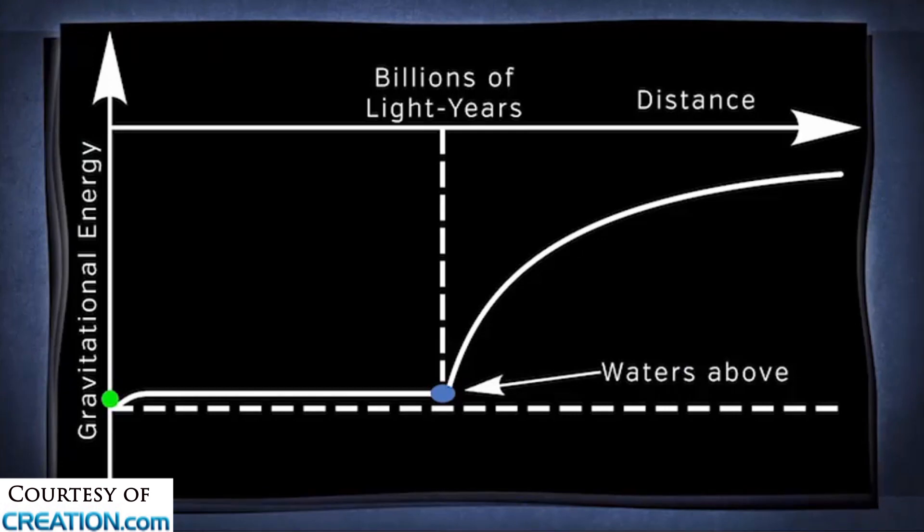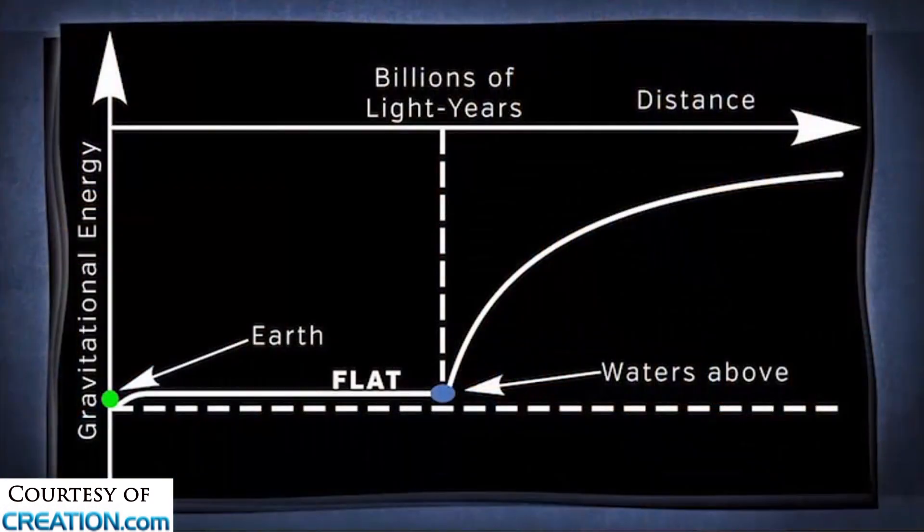So then you notice to the left of the waters above, it's mostly flat, except for a little tiny dent made by that green ball at the left, which is the earth. That's right above a certain critical depth of gravitational energy where interesting things happen to time in Einstein's equations.